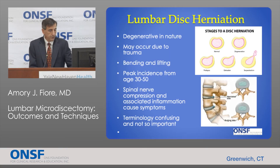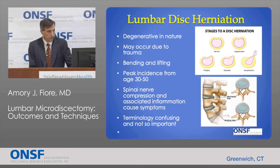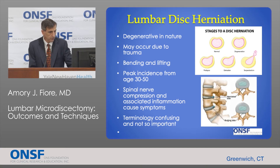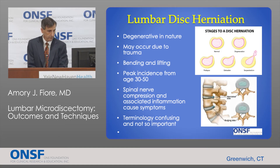A lumbar disc herniation is a degenerative problem. Sometimes it may occur because of trauma, but a lot of times it occurs because of bending and lifting — bending over and lifting puts a lot of stress on the disc and will often cause a herniation. Sometimes there's no injury and it just happens spontaneously. It's a kind of arthritic problem where the cartilage degenerates over time and can break down. The peak incidence is between age 30 and 50. The symptoms are caused by nerve compression from the disc herniation squeezing the nerve, as well as inflammation secondary to that. People often wonder about the terminology — bulge, herniation, prolapse — all different terms, but they're really not important. It's really just a question of whether the disc is pushing on a nerve or not. If it's not pushing on a nerve, it's typically not going to cause symptoms.